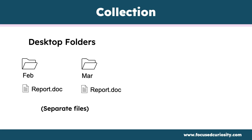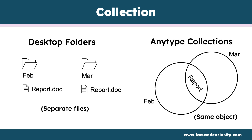Let's talk about your desktop. If you have a Word document in the February folder, technically you can't have that same file in both the February and March folders — they would have to be copies, and editing one wouldn't update the other. However, that's not the case in AnyType, which makes it a really flexible system. Because collections are really just groupings, you can have an object be part of multiple collections. Whichever collection you go to and edit that object, it will be updated everywhere.